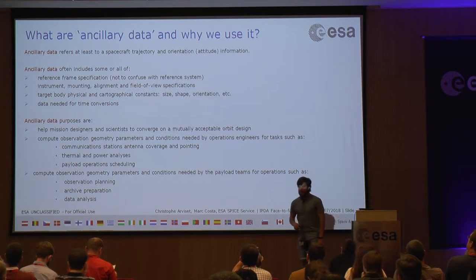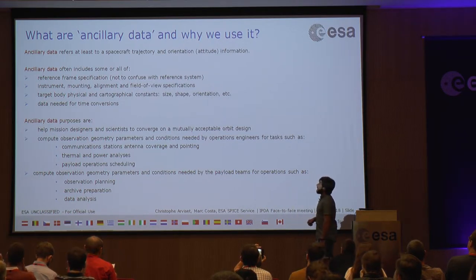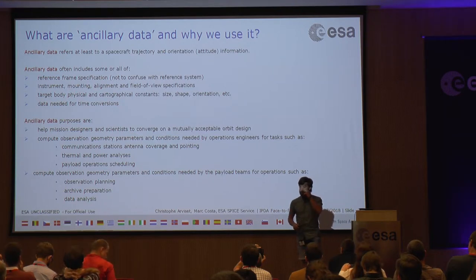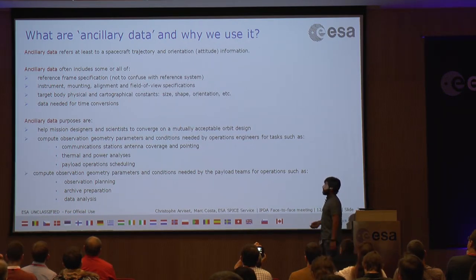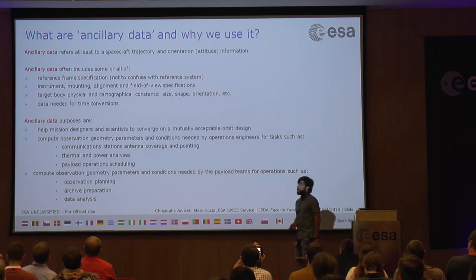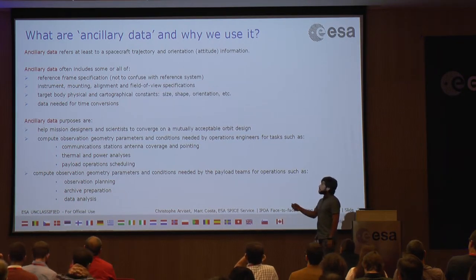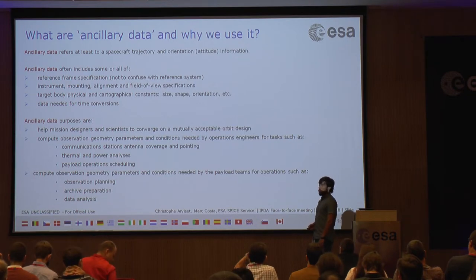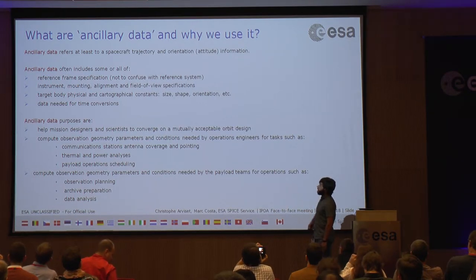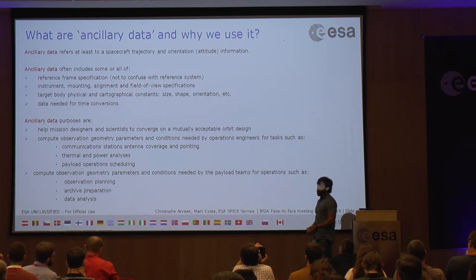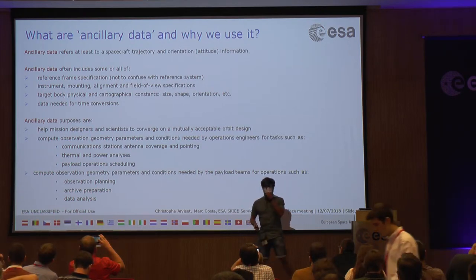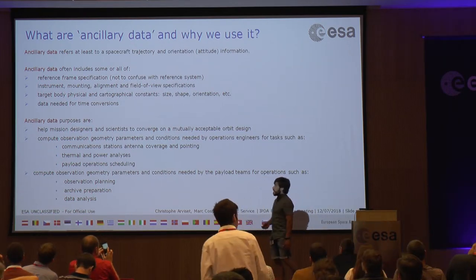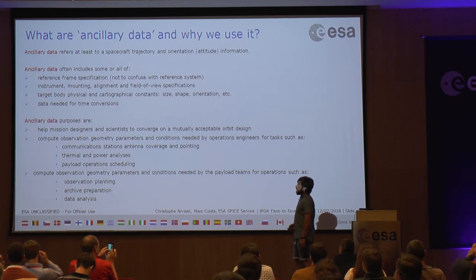Ancillary data — it's one of those words which sounds pedantic but everyone sort of knows what it means. When we talk about ancillary data, we're talking about spacecraft or body trajectory and orientation. We also often refer to reference frame specifications — not to confuse with coordinate systems — instrument mounting alignment, field of view specifications, and physical and cartographic constants for the target bodies we're observing, in your case mainly the Earth. Also data needed for time conversions.